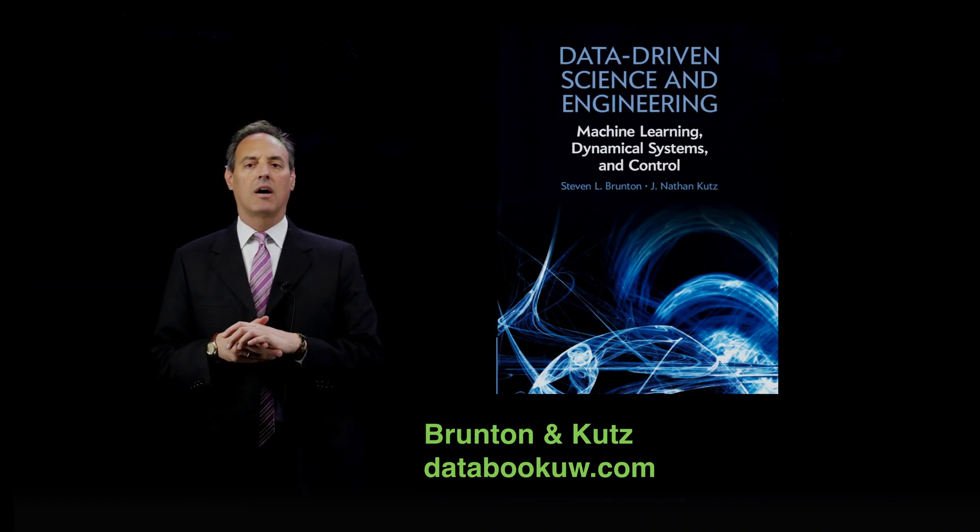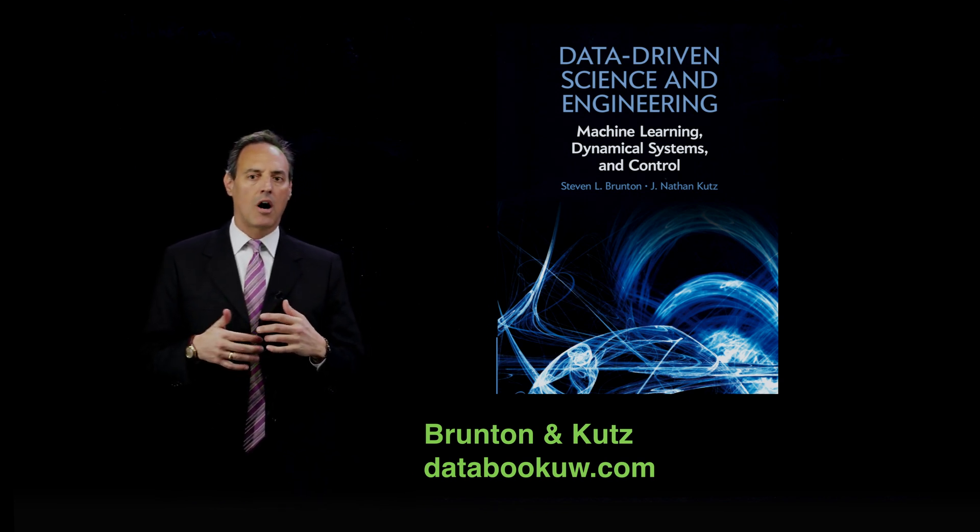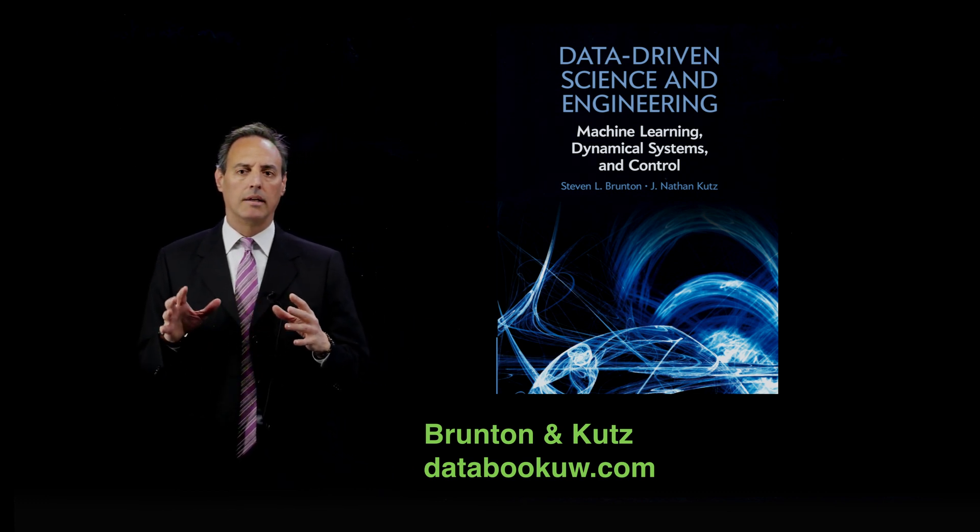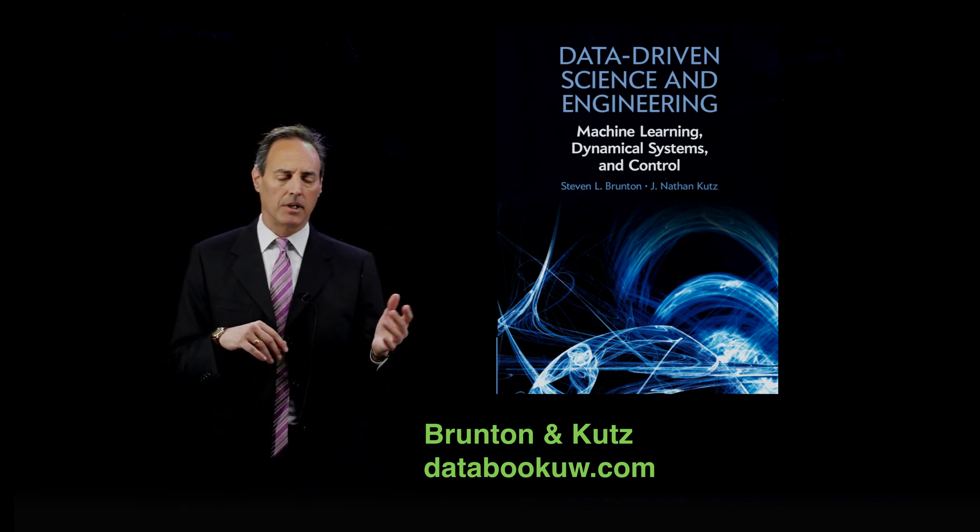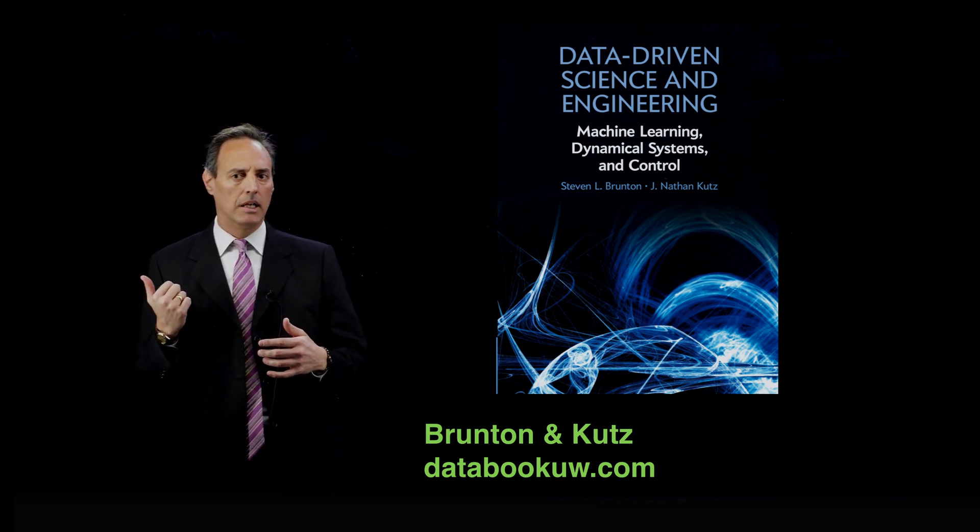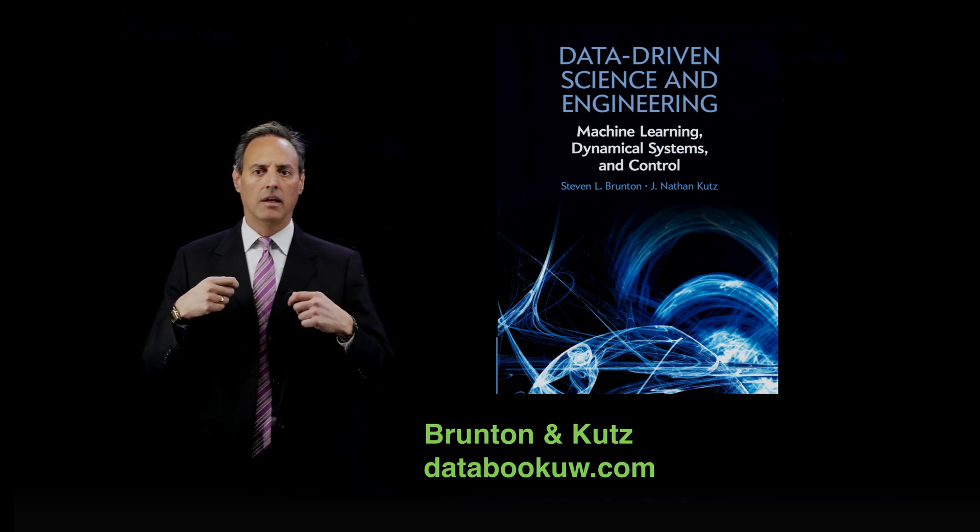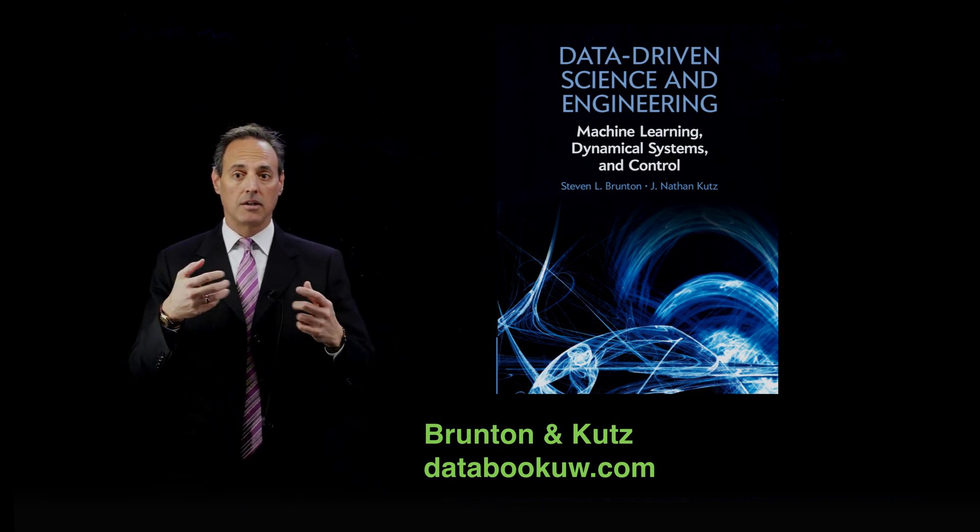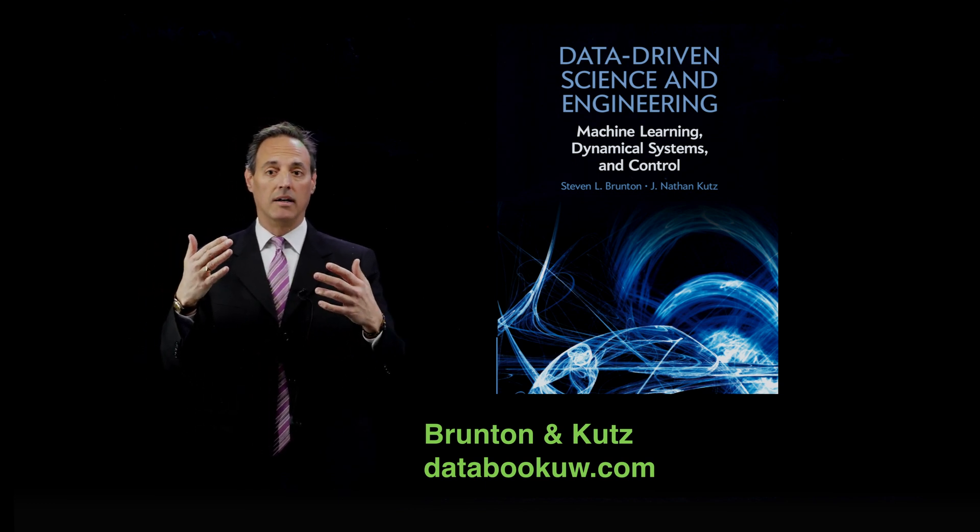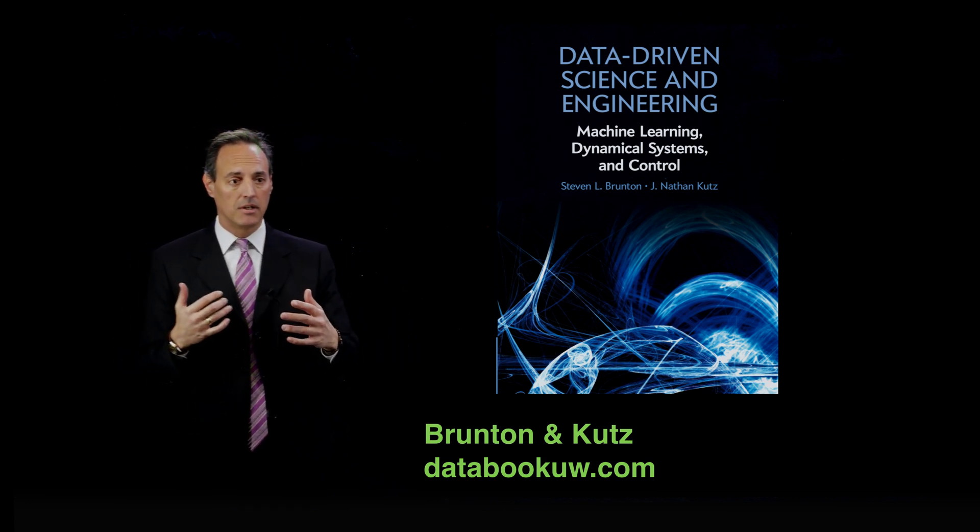We're going to continue talking about unsupervised learning and discuss another common technique. There are three total techniques we'll highlight in chapter five of the book because they are commonly used. In the last section, 5.3, we talked about k-means clustering, which is just a matter of picking cluster centers and associating all the data with one of the two and iterating towards finding a good set of cluster centers. That's what the k-means algorithm did.